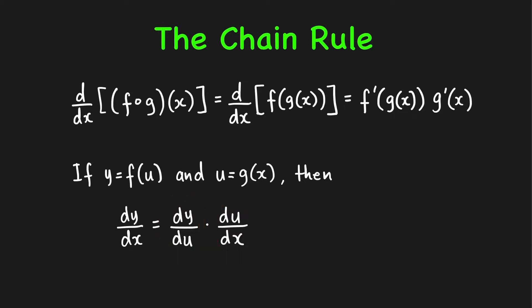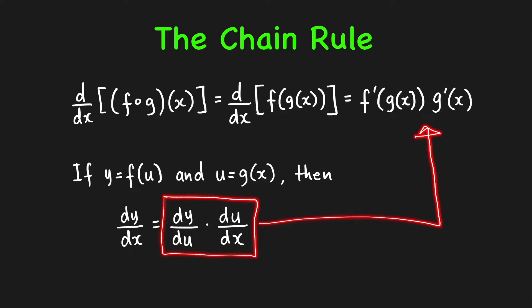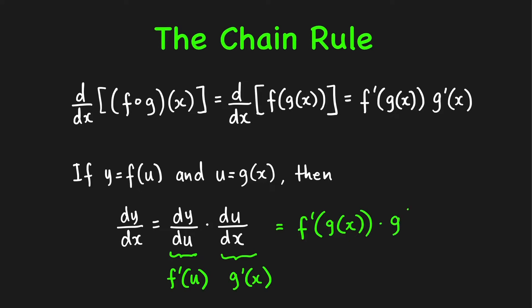If we look at this multiplication in Leibniz notation and think of dy, du, and dx as separate entities, it's like canceling the du, and we get dy over dx — the derivative of y with respect to x. This product in Leibniz notation is equal to the standard expression because dy/du is equal to f prime of u, and the derivative of u with respect to x is g prime of x. Since u equals g of x, this becomes f prime of g of x times g prime of x.